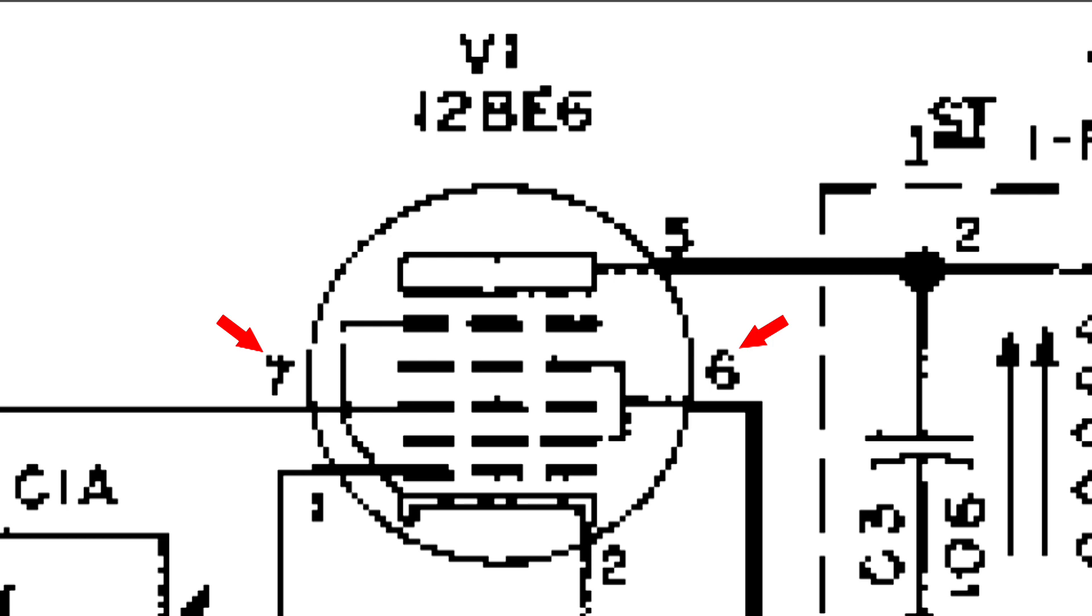These two grids are part of the mixing process. Pin 7 is the signal coming from the antenna, in other words, the radio station frequency. Pin 6 is held positive, and we have two grids there that are held positive. That helps pull electrons from the cathode.